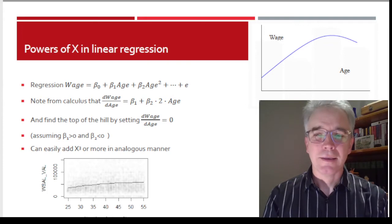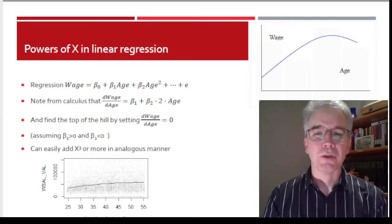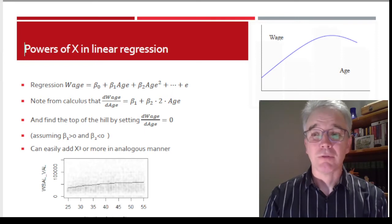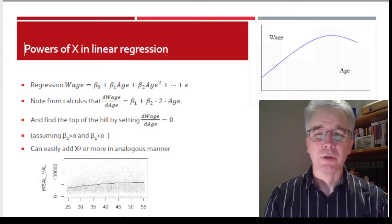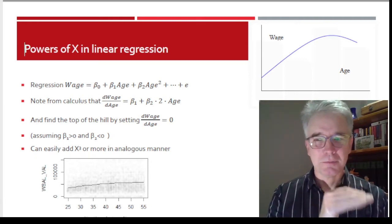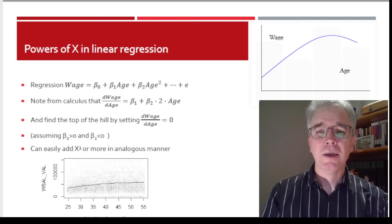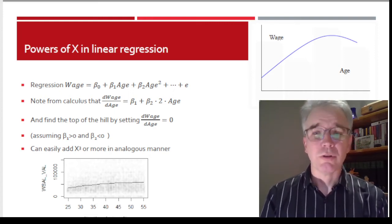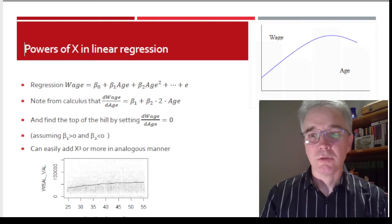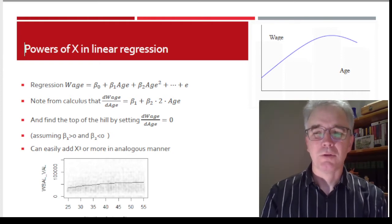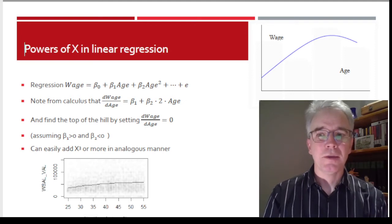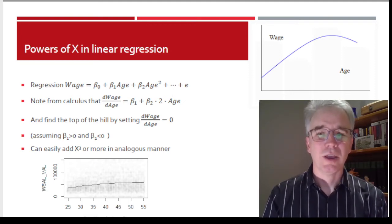So how do we find where is the over the hill point? Well, from calculus, I know the slope is going to be β₁ + 2β₂·Age, so set that equal to 0 because at the local maximum or local minimum, the slope is going to be equal to 0. Just a little bit of calculus knowledge and you can find exactly where I estimate is the peak of this wage age curve.